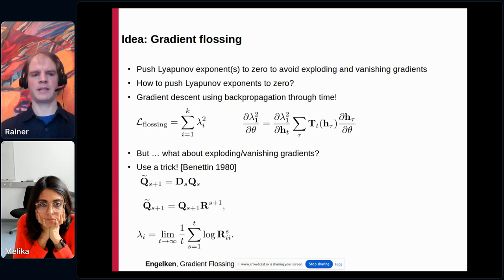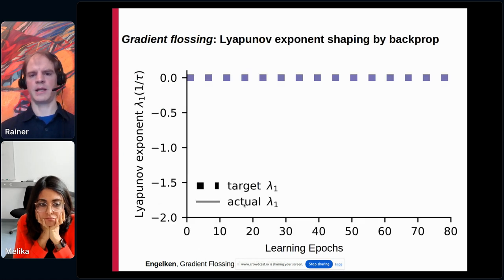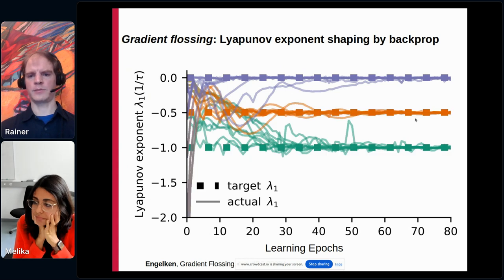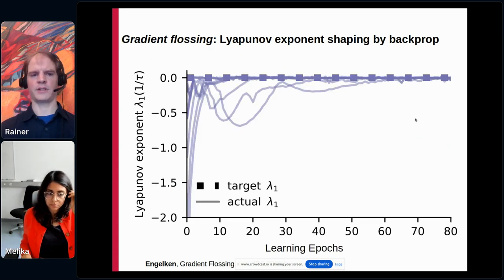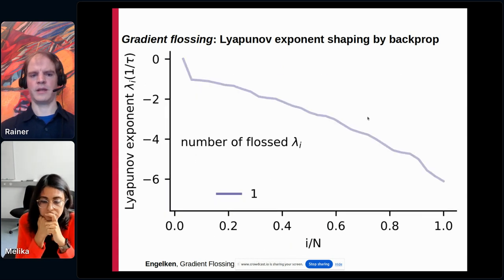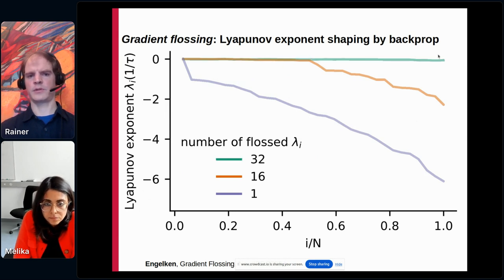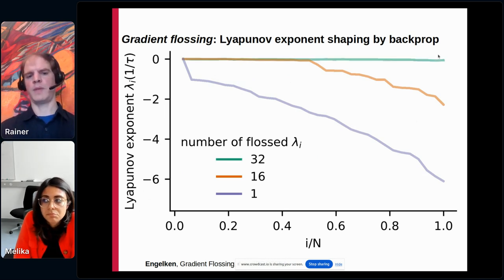Here you can see the largest Lyapunov exponent as a function of learning epochs: targeting zero, over 80 epochs we push it close to zero. This also works for other targets. We can do this not only for one Lyapunov exponent but for several — here you see the entire Lyapunov spectrum, with 1, 16, or 32 exponents pushed to zero. In a nutshell, we can shape the Lyapunov spectrum as desired, and for better training we push them close to zero to avoid exploding or vanishing gradients.